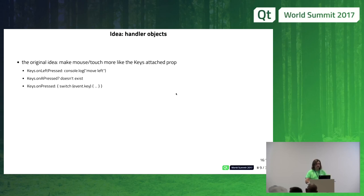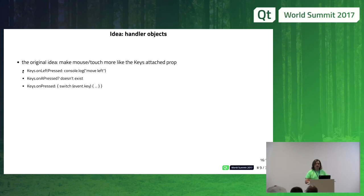A couple different people independently had this idea and approached me: what if we make input handling more like the Keys attached property? If you've done keyboard handling, you can do it as a one-liner — handle the left arrow with 'Keys.onLeftPressed' and write some code. But there's no 'onAPressed' — for Control+A you end up writing 'Keys.onPressed' with a switch statement and checking modifiers. There are a lot of signals already but not enough for every key on every keyboard.